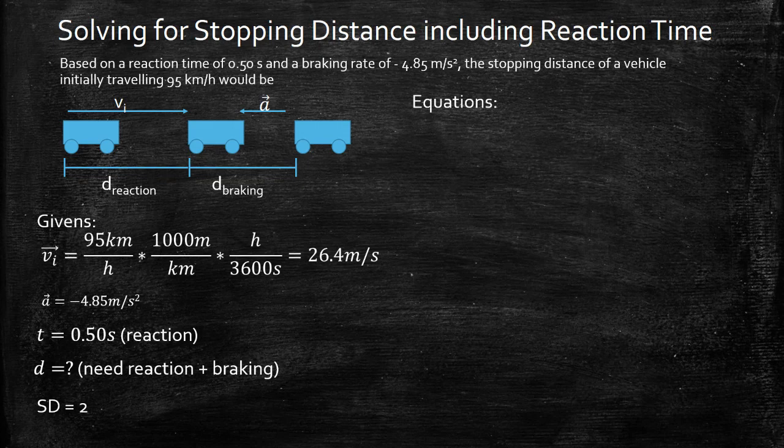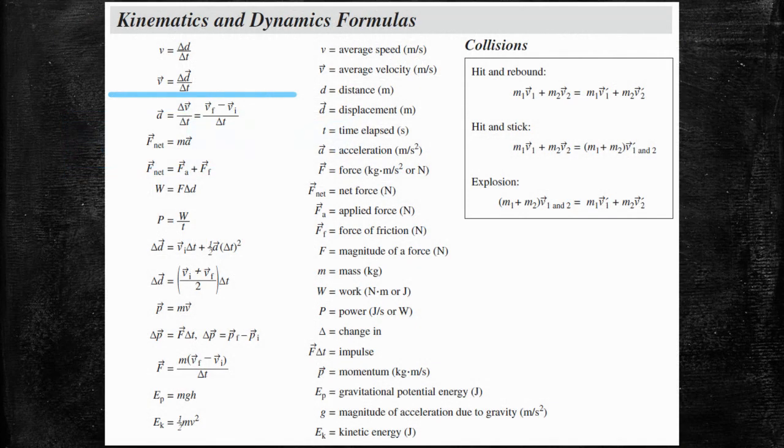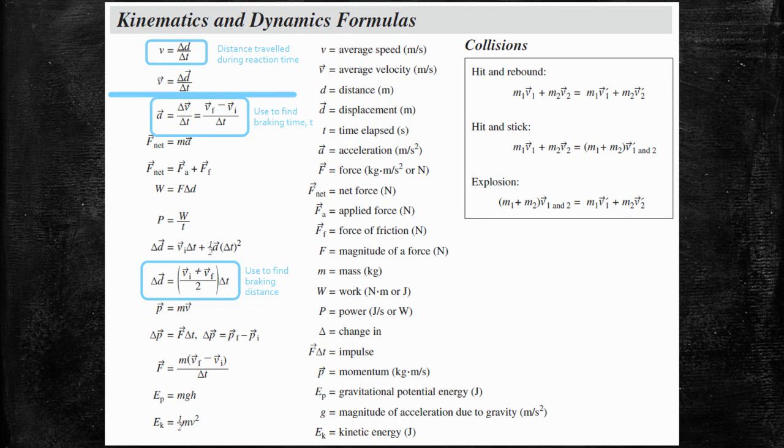Now it's time to pick our equations. If we look at our data sheet you'll see we're going to need actually three equations. The first equation is going to be the distance traveled during reaction time. There's no acceleration involved. It's a simple equation. The next equation is we're going to need to use this acceleration equation to find how long our car was applying the brakes for, because we're going to need to use the time we find from that into a third equation to calculate the braking distance.